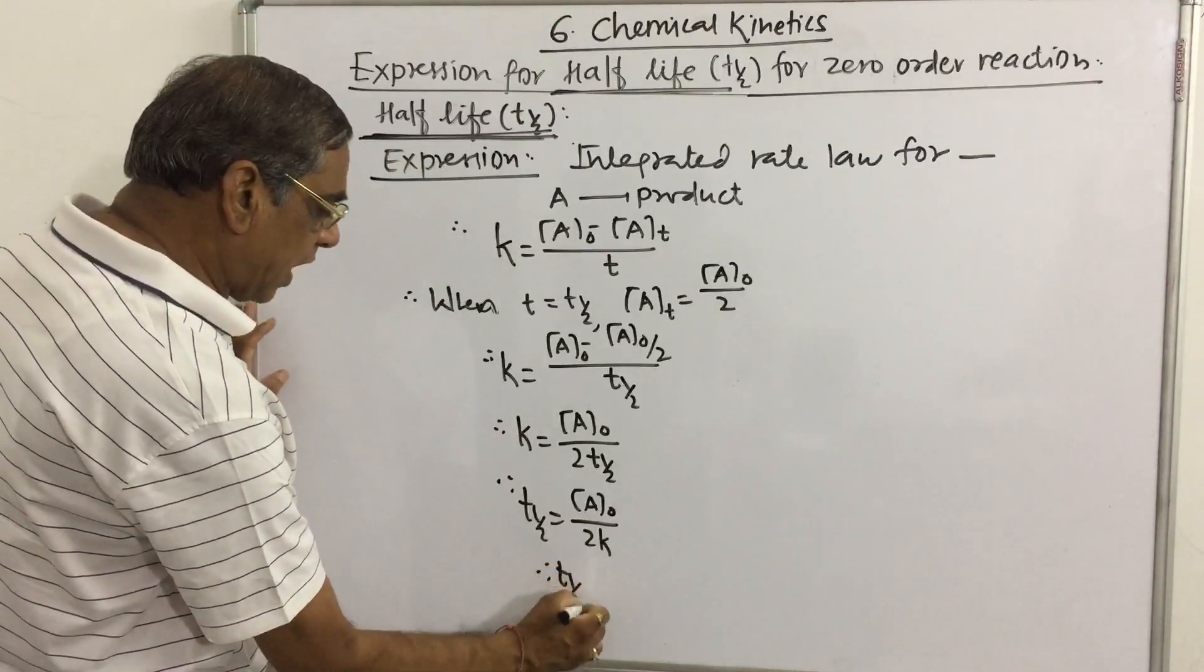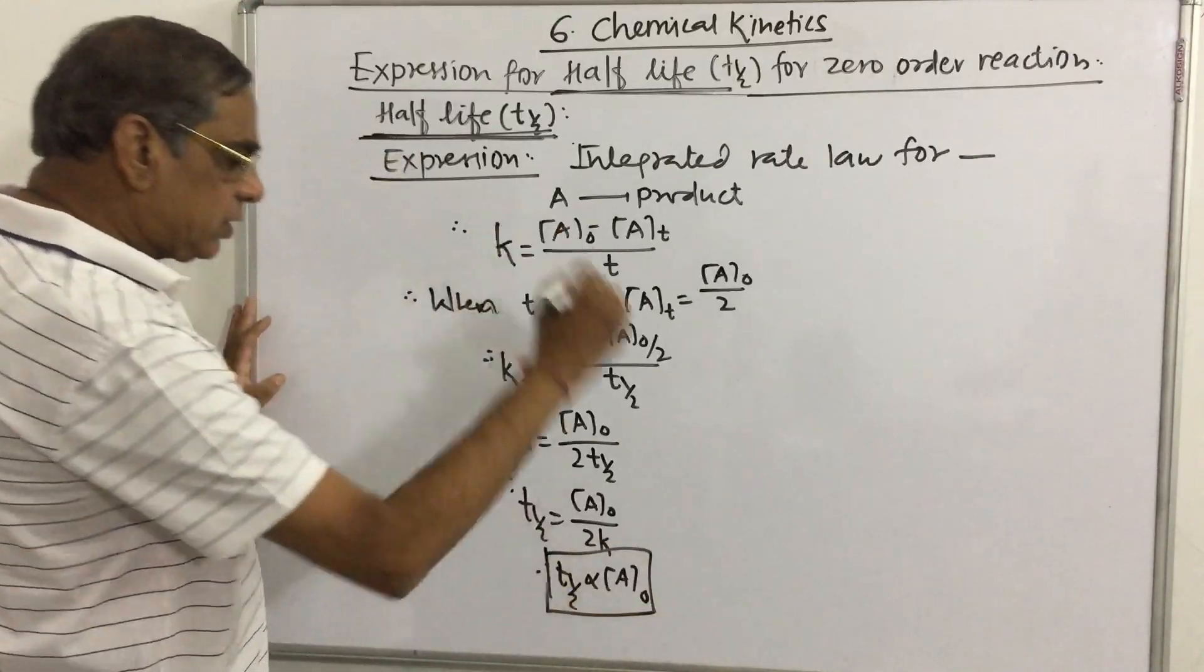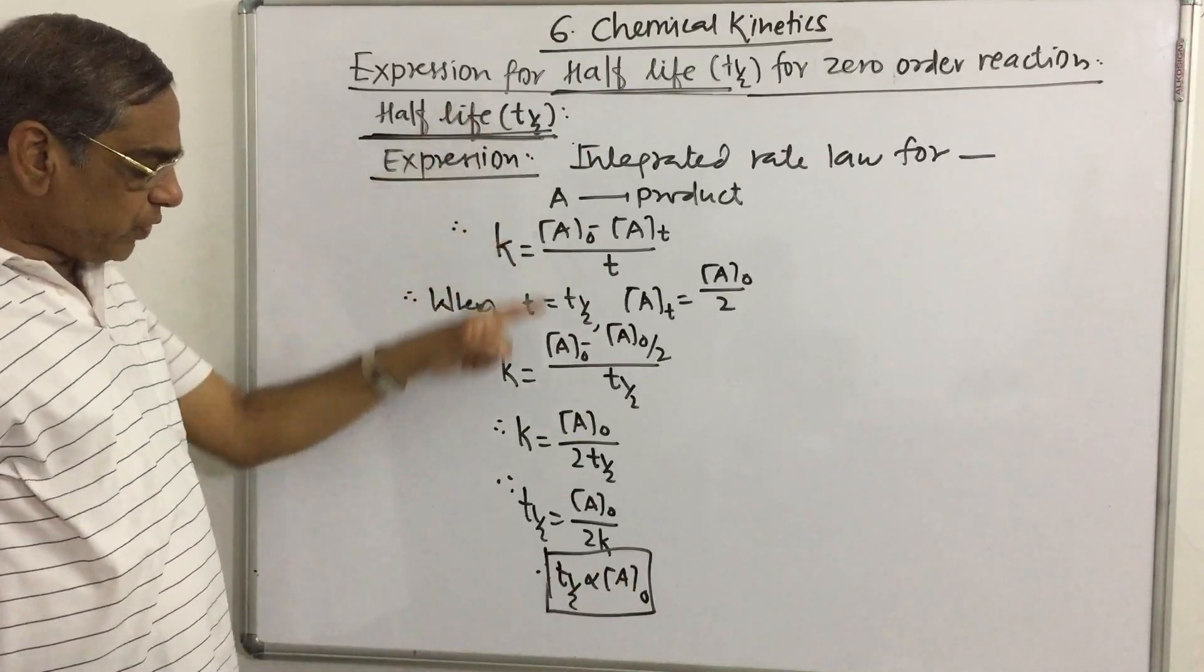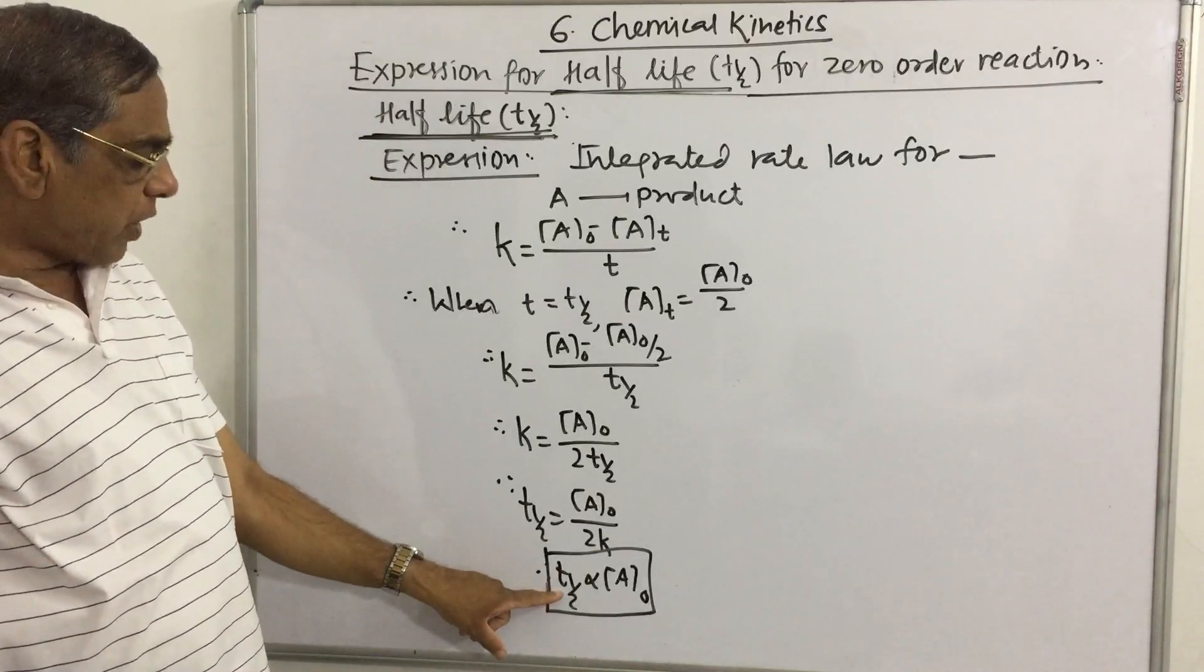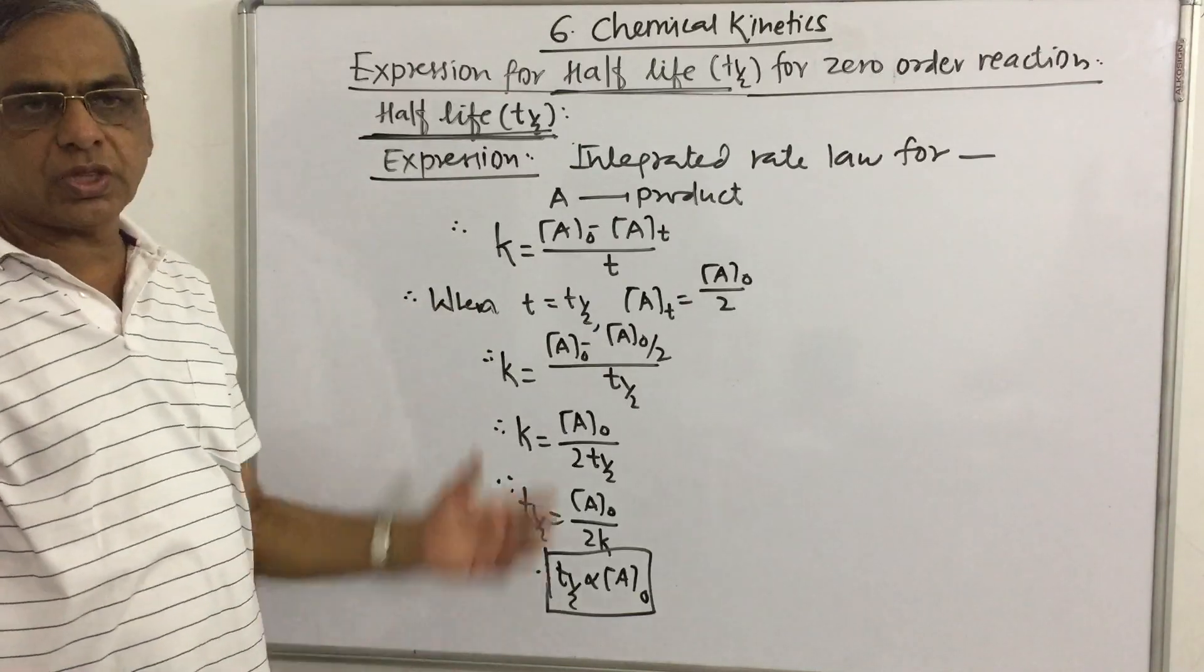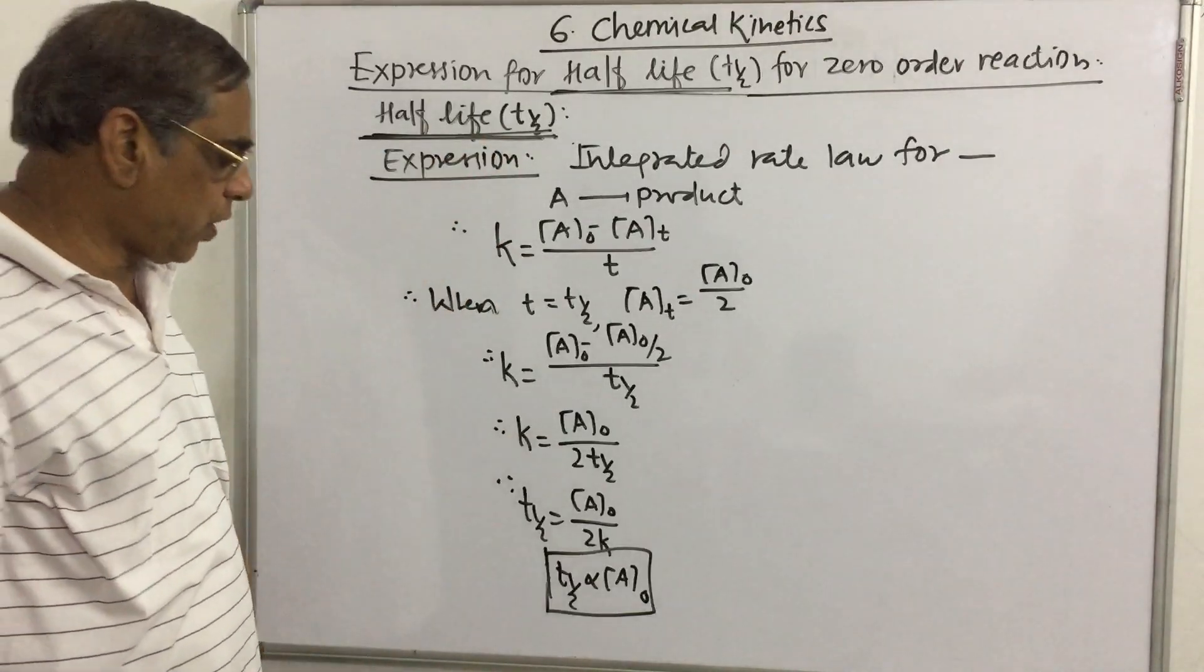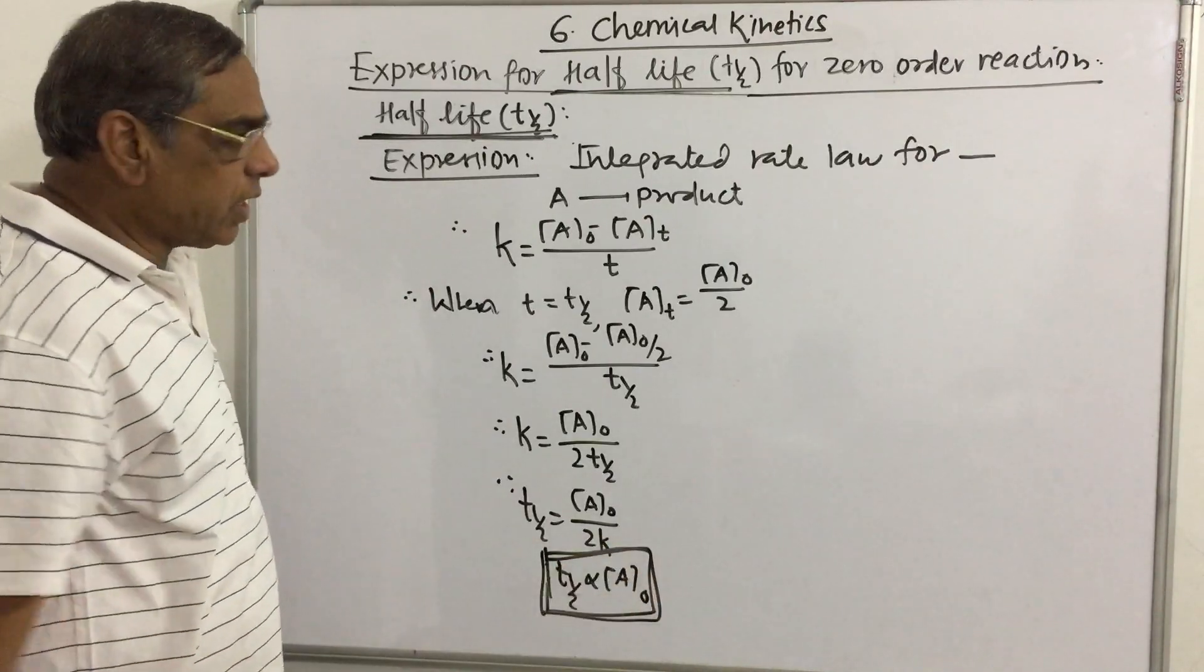we can say t_half is directly proportional to A₀. This is the relation between the half-life for the zero-order reaction and initial concentration. From this equation, the half-life for a zero-order reaction is directly proportional to the initial amount. The more initial amount we have, the more time is required to reach the half-life for the zero-order reaction.